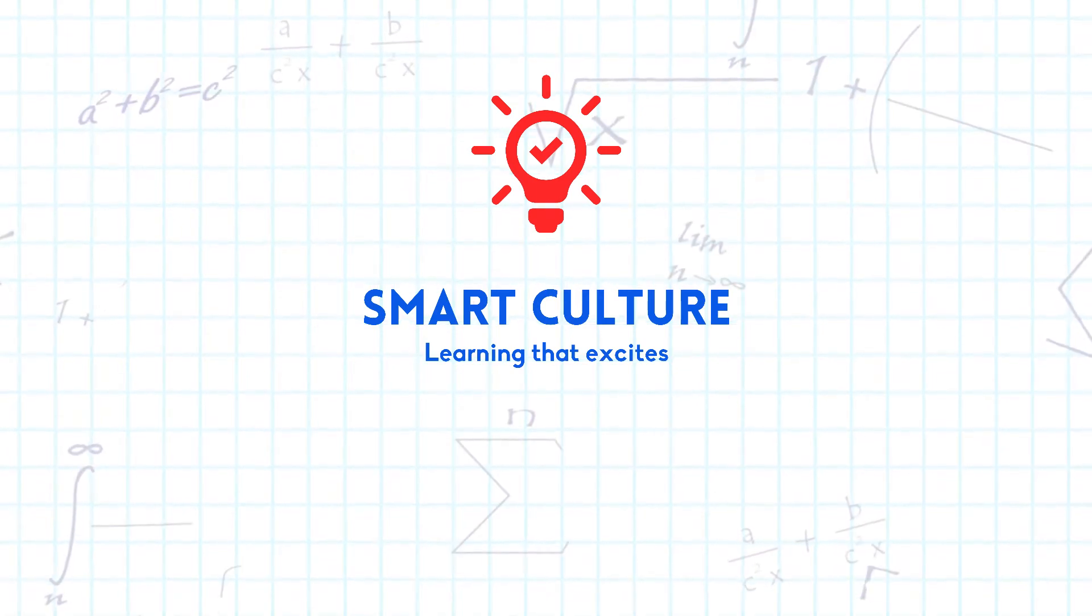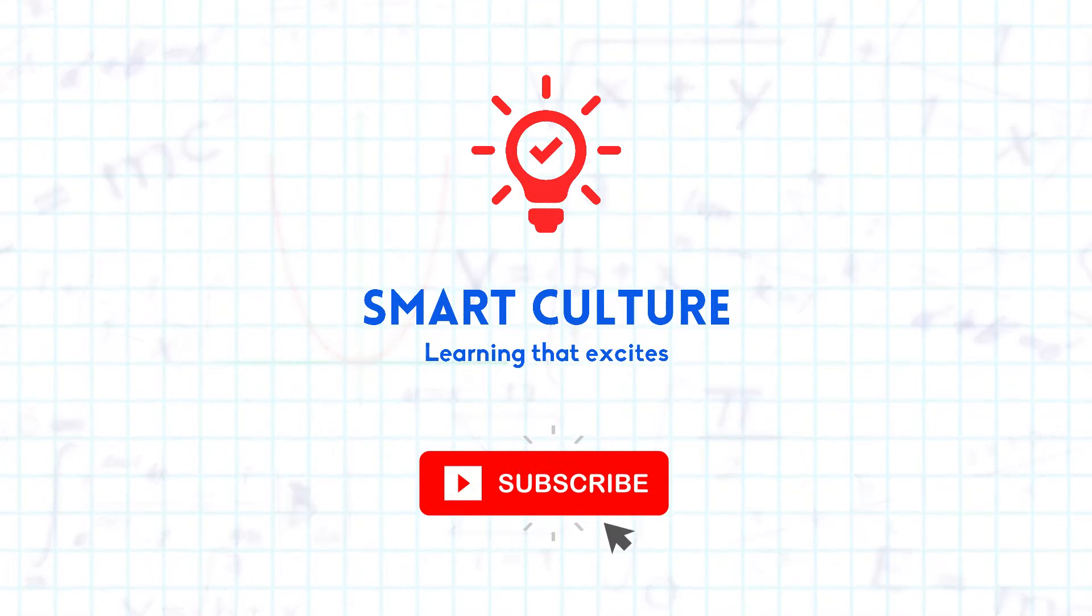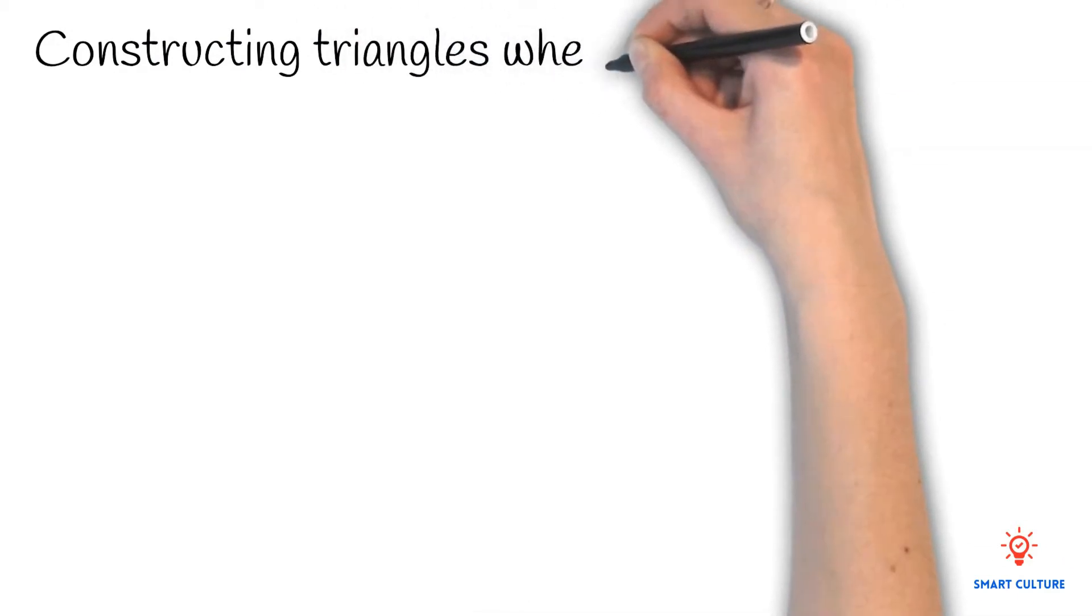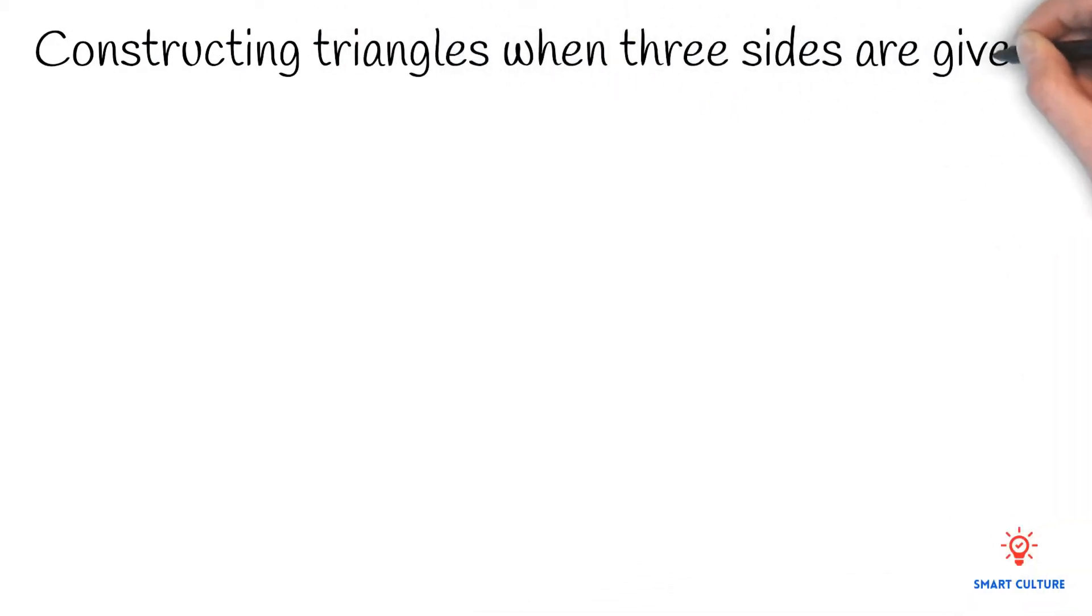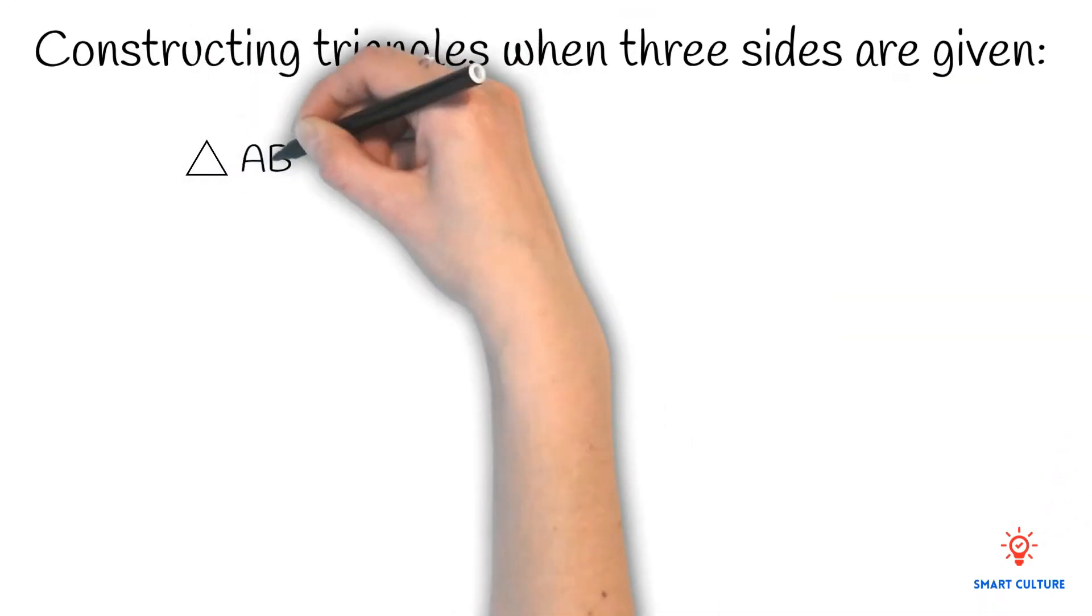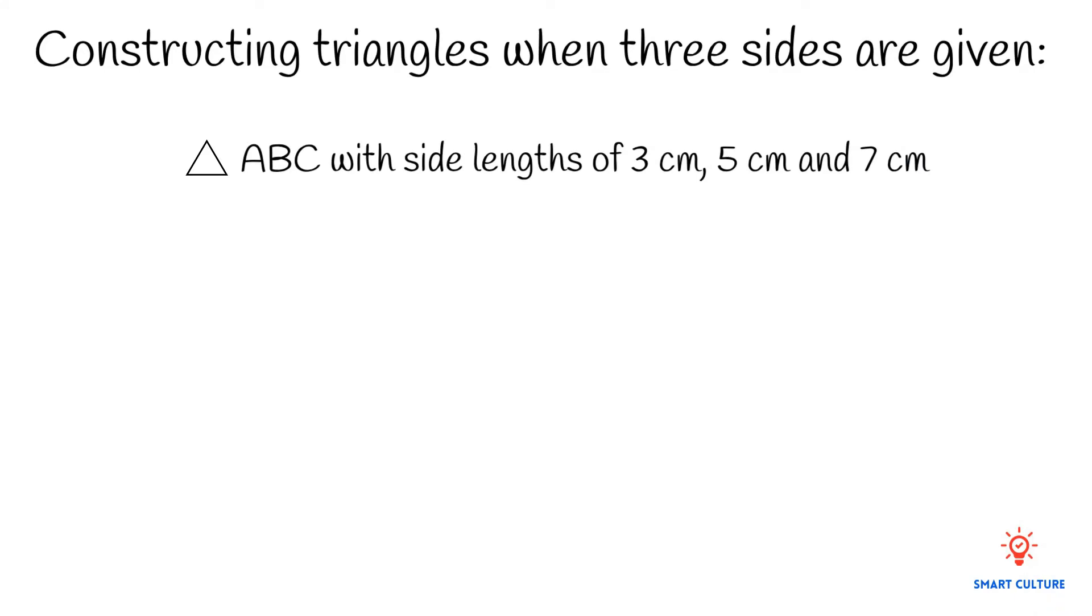Smart Culture Mathematics. In this video we'll learn how to go about constructing triangles when three sides are given. We have to construct triangle ABC with side lengths of three centimeters, five centimeters, and seven centimeters.